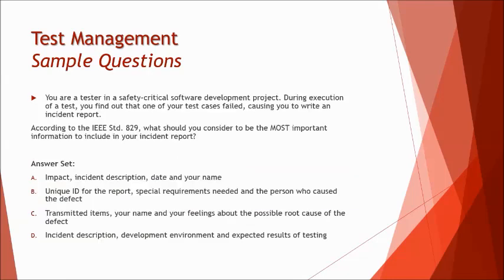The next question: you are a tester in a safety critical software development project. During test execution, a test case fails and you write an incident report. According to IEEE standard 829, what is the most important information to include in your incident report? The key focus is on what the incident report must include — the safety critical context and the standard are diversions.